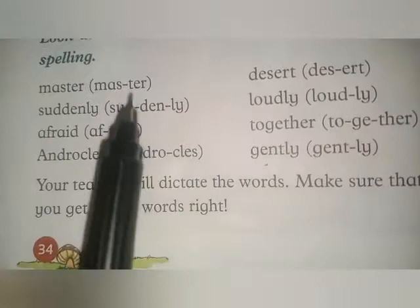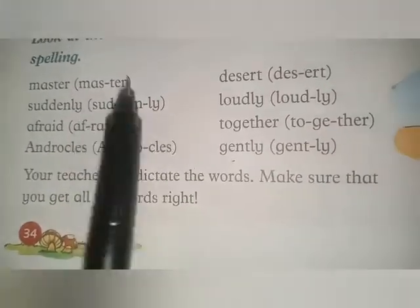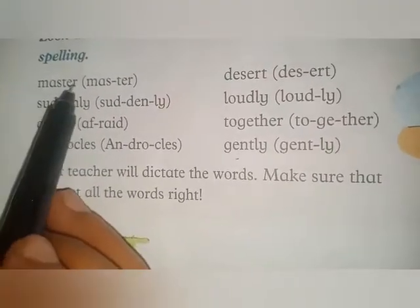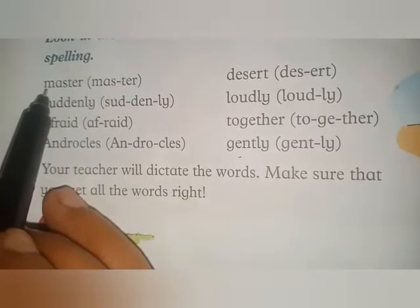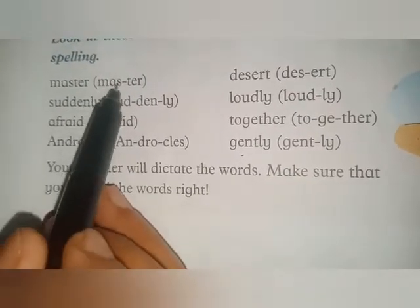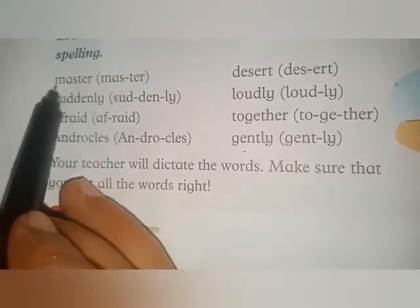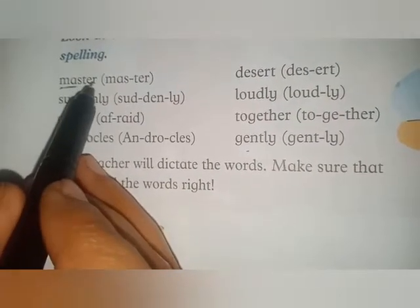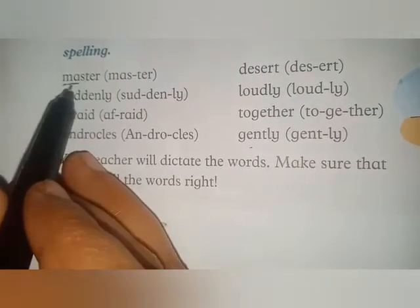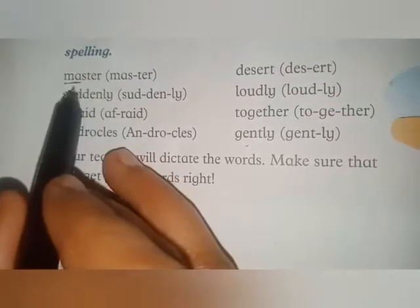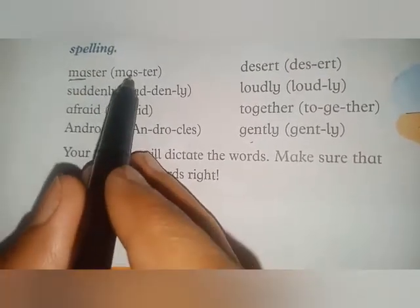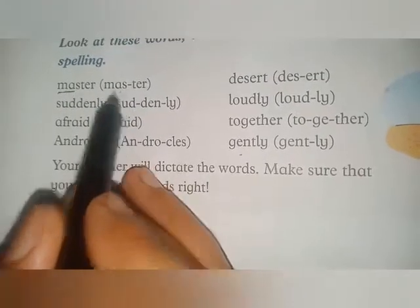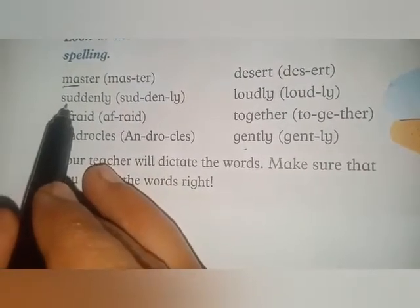Now learn the spelling. The first word is 'master'. M-A-S — 'mass', T-E-R — 'ter': master. Again: M-A-S — mass, T-E-R — ter: master.